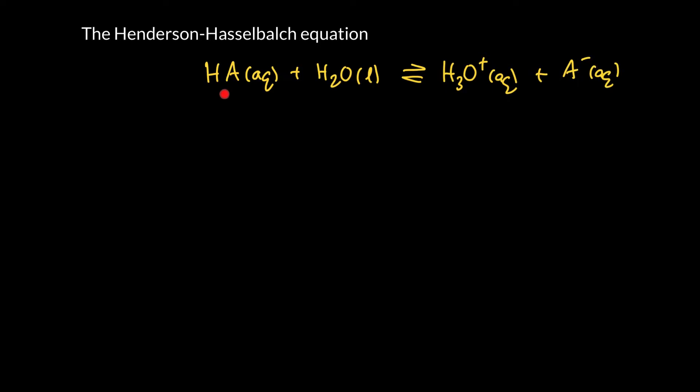Now in a buffer, you normally start with both this and this present, and we will see that when we have both these present, these concentrations aren't going to change very much at all in our ice chart problem. So the initial concentration of these will end up pretty much being the equilibrium concentration of these.